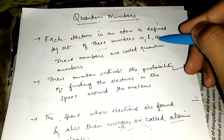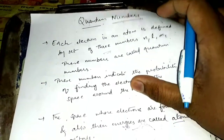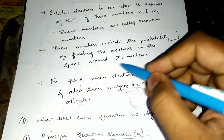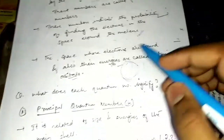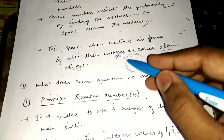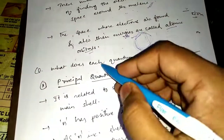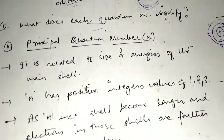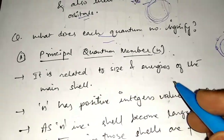The main 3 quantum numbers are N, L, and ML. These numbers indicate the probability of finding the electrons in the space around the nucleus. The space where the electrons are found is given by the atomic orbitals. The first quantum number is the principal quantum number, the N value. The principal quantum number is related to the size and energies of the main shell.